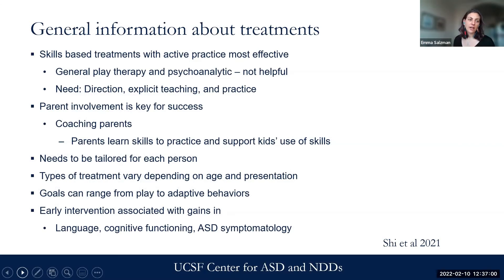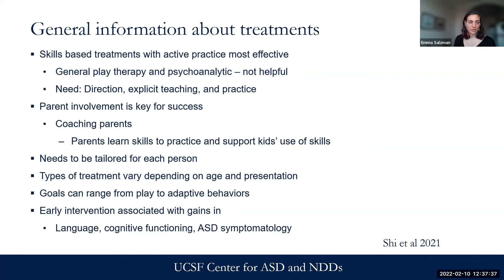In terms of general treatments, we want to think about skills-based treatments for individuals with autism and their families, with direct and explicit teaching and practice of skills. Psychodynamic or psychoanalytic practices are much less effective than skills-based training programs. Coaching parents is extremely helpful and important to incorporate into behavioral treatments for autism. Treatments need to be tailored — the type of treatment varies depending on age and presentation, and goals can vary from reducing anxiety to building adaptive behaviors and play. Typical recommendations include ABA, and there are different kinds of ABA therapies. There is also some promise in CBT for individuals with autism, but more rigorous randomized clinical trials are needed.